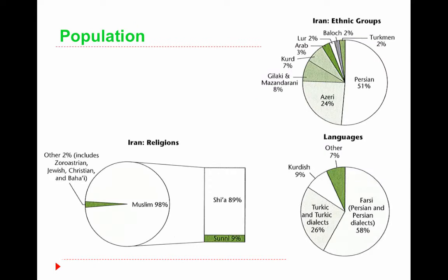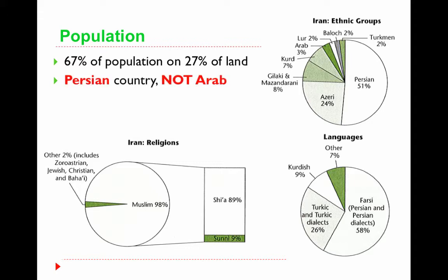Population is really important, and maybe this is an area where we have some misconceptions. When we talk about population density, 67% of the population lives on 27% of the land. A key misconception: Iran is Persian, not Arab, and there's a difference. The most commonly spoken language is Farsi or Persian in English, not Arabic as some people might believe.